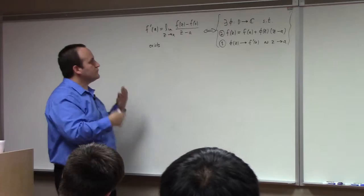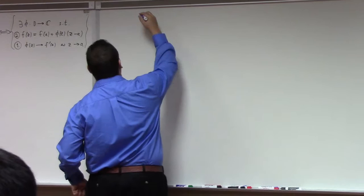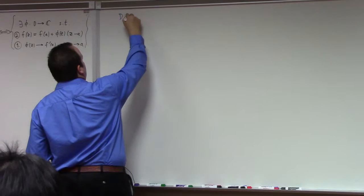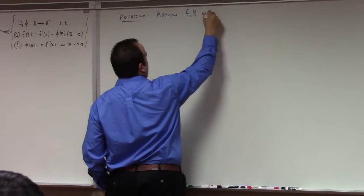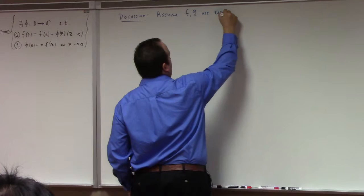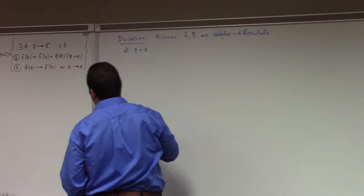It's a useful theorem — it allows us proofs of things that are really kind of nice and tidy. Let me show you one. I'm not even going to do a proof exactly; I'm going to give you a discussion, and from this discussion we're going to discover a proof of something. Let's assume that f and g are complex differentiable at z equals A.